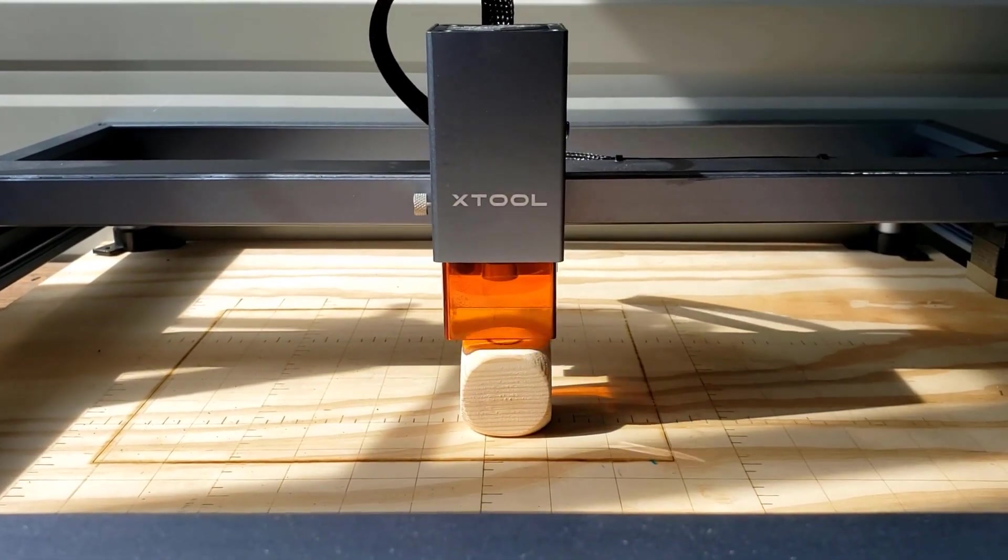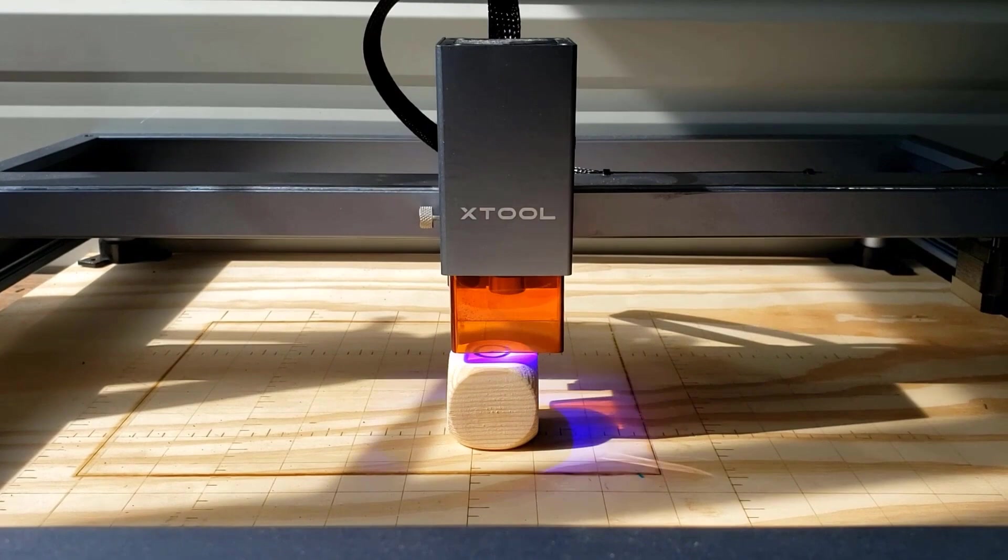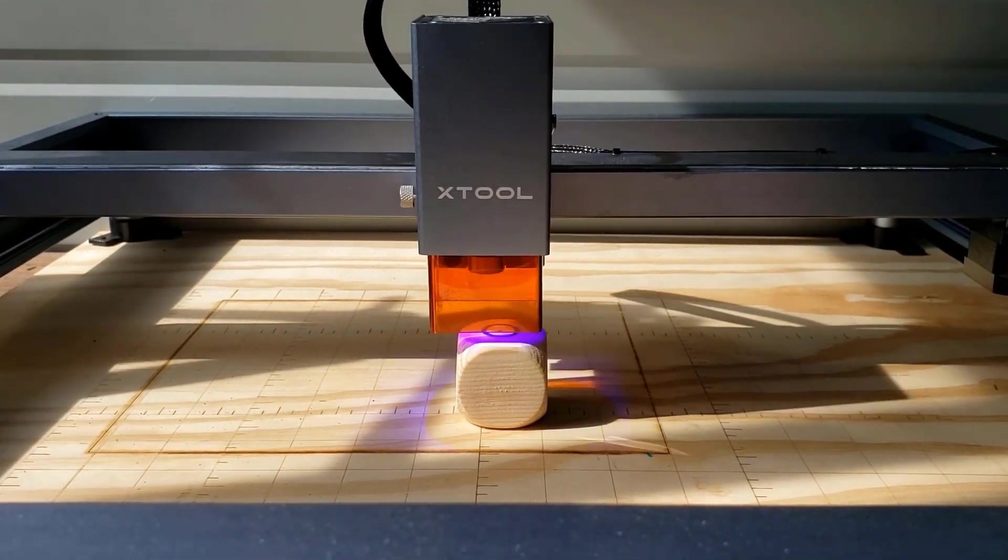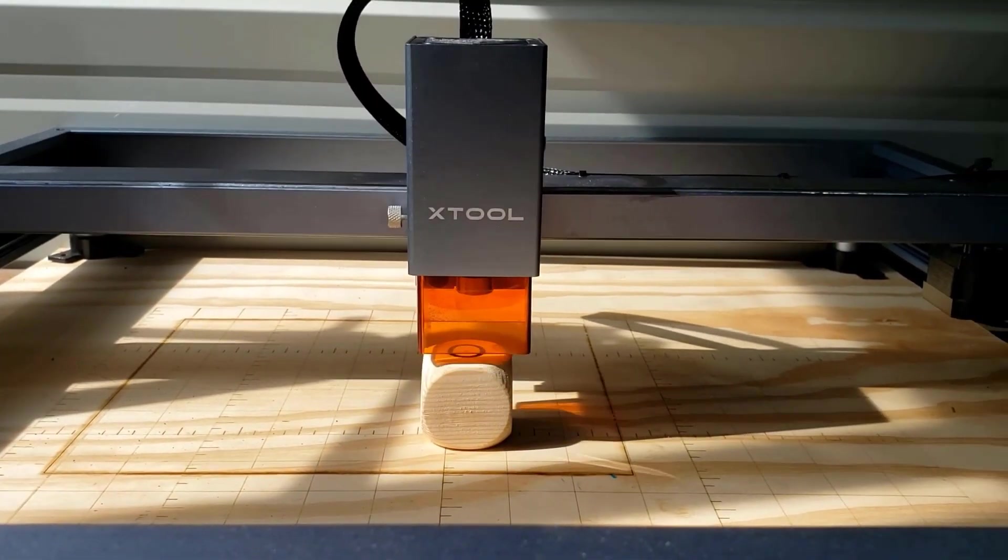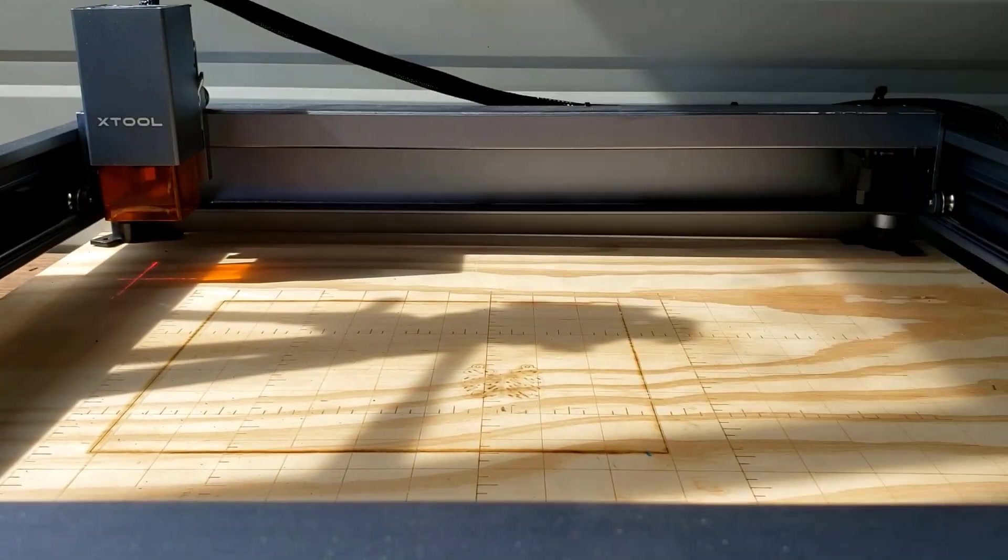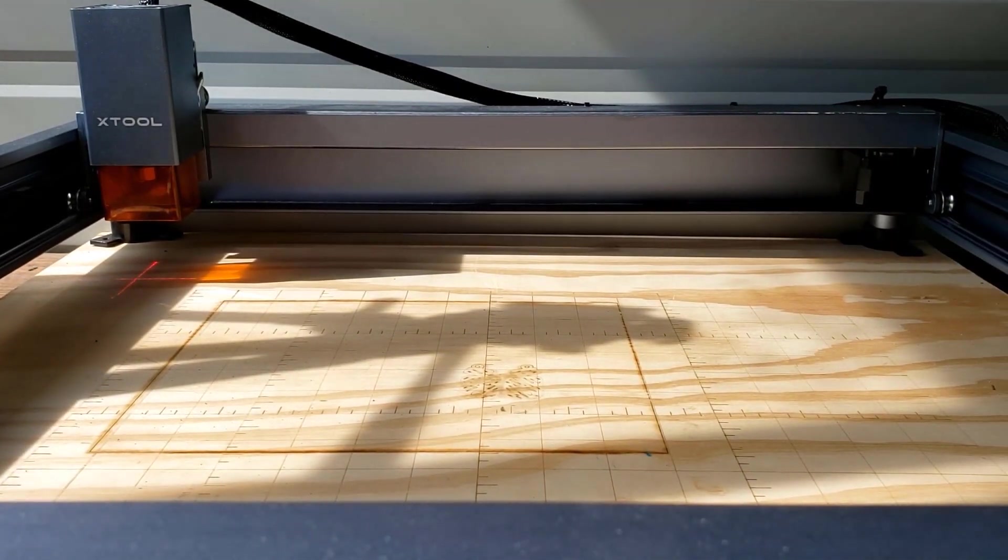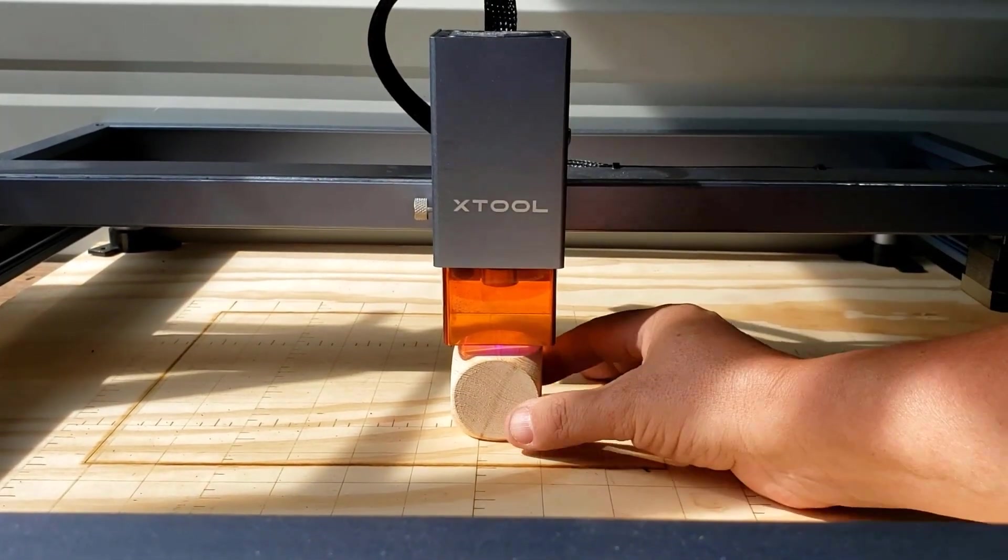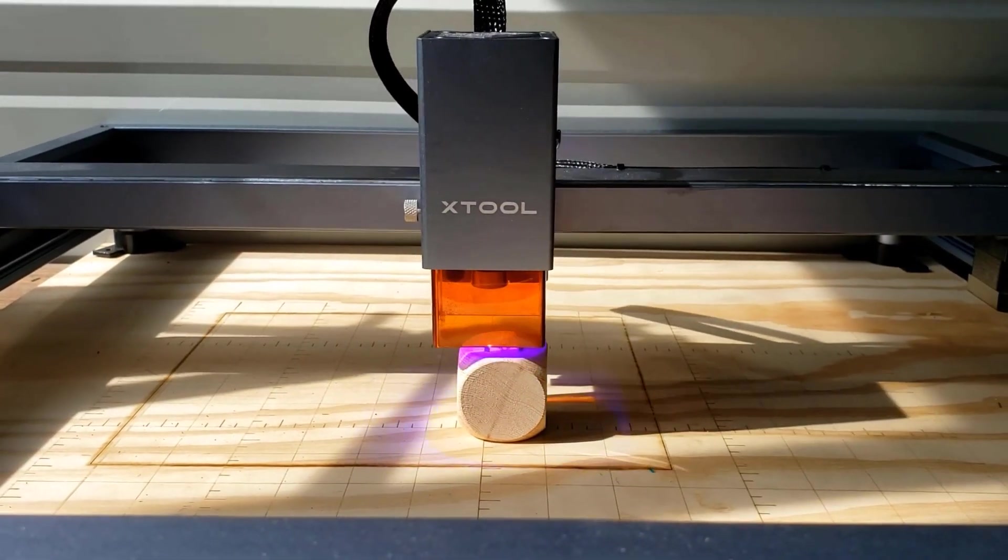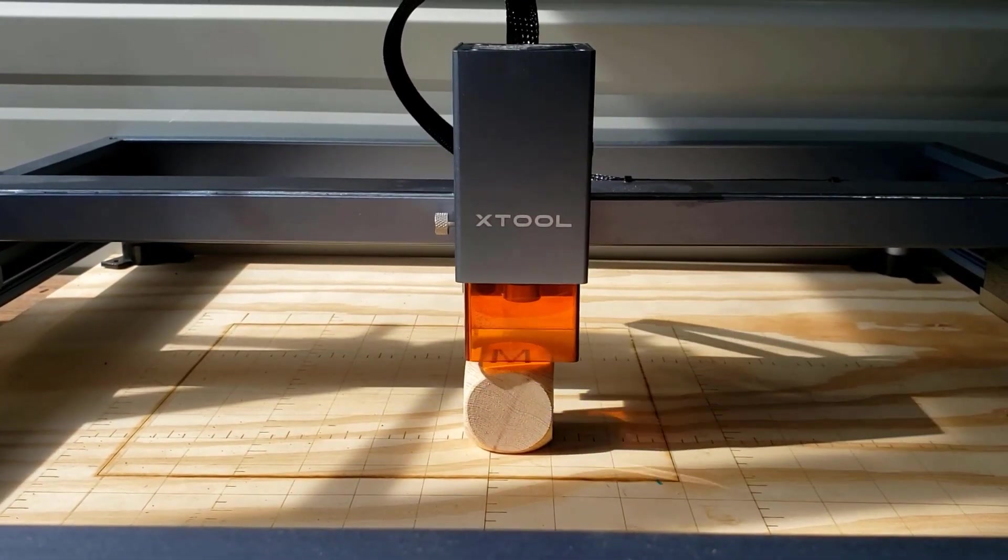I used Lightburn to create and size the letters for the word home and began engraving them onto each of the blocks. I changed the angle of the camera and I think I like this one better. At least y'all can see what the laser is doing.